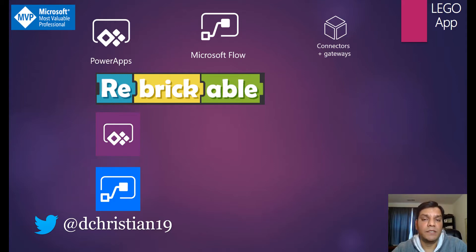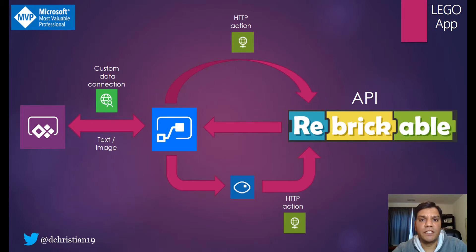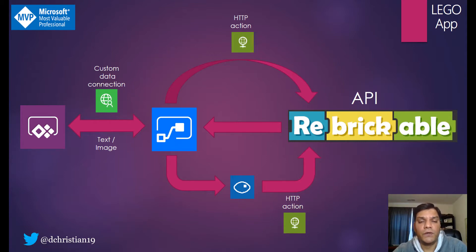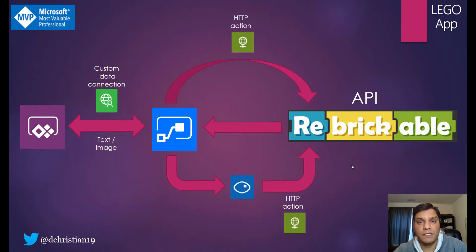This was basically the flow in the previous version: from Power Apps I made a custom data connection to get the image, and then in Flow, if it was an image, I sent it to Cognitive Vision OCR to get the number and made an HTTP connection to the API which returned the part information. If it was just text, it talked directly to the HTTP API connection and returned that information.